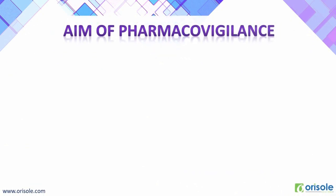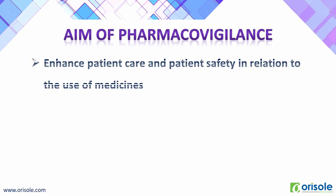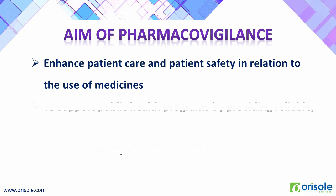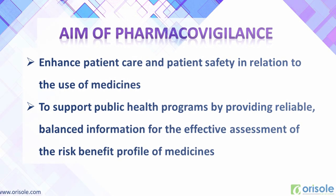So what is the aim of pharmacovigilance? Early detection of unknown safety problems, identification of risk factors, quantifying risks, preventing patients from being affected unnecessarily, to enhance patient care and patient safety in relation to the use of medicines, and to support public health programs by providing reliable, balanced information for effective assessment of the risk-benefit profile of medicines.